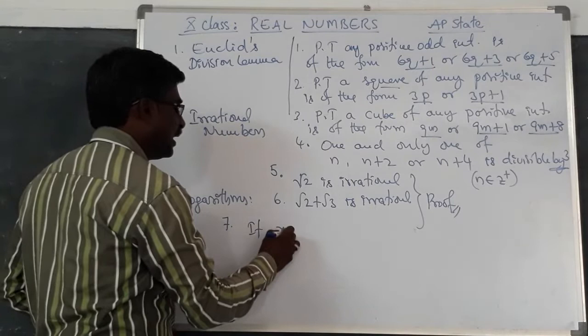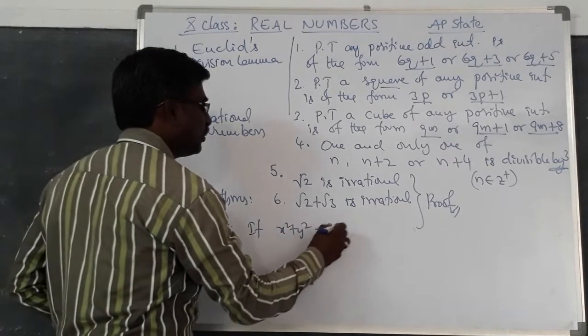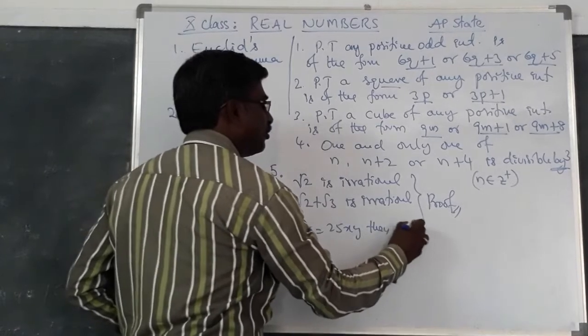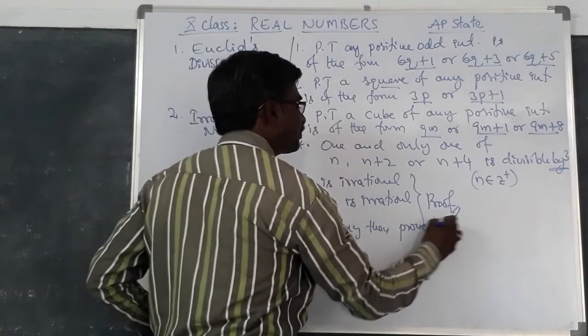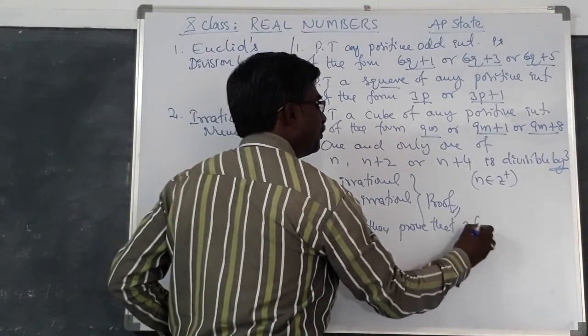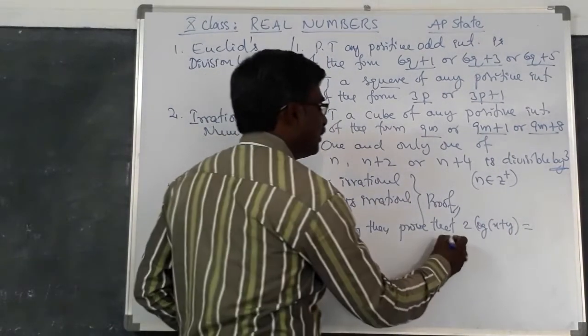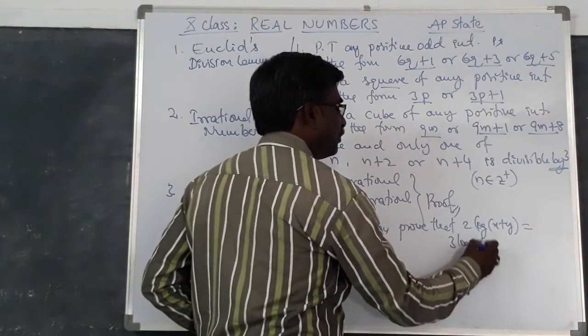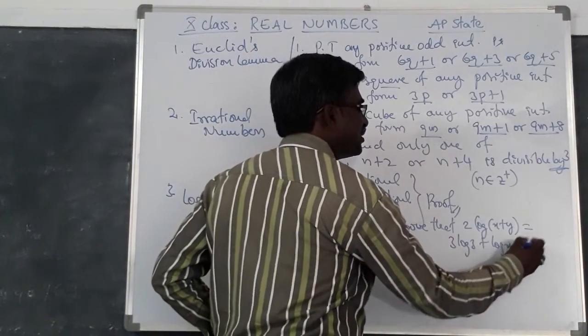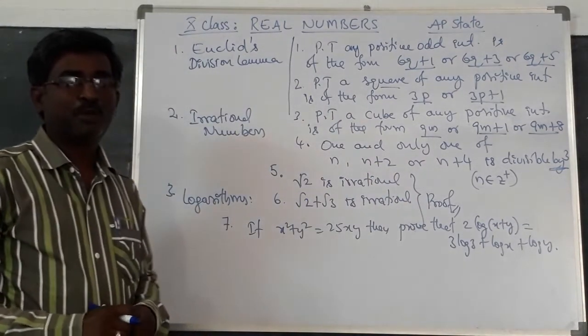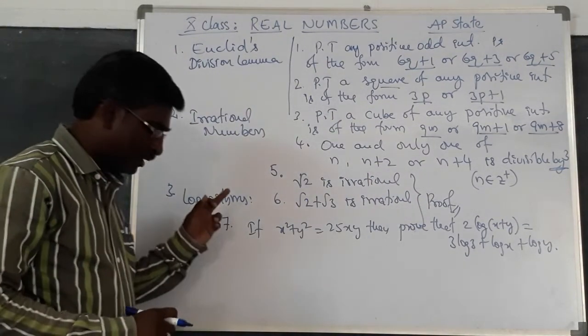if x squared plus y squared equals 25xy, then we have to prove that 2 times log of x plus y is equal to 3 log 3 plus log x plus log y. So this is one of the problems to be prepared.